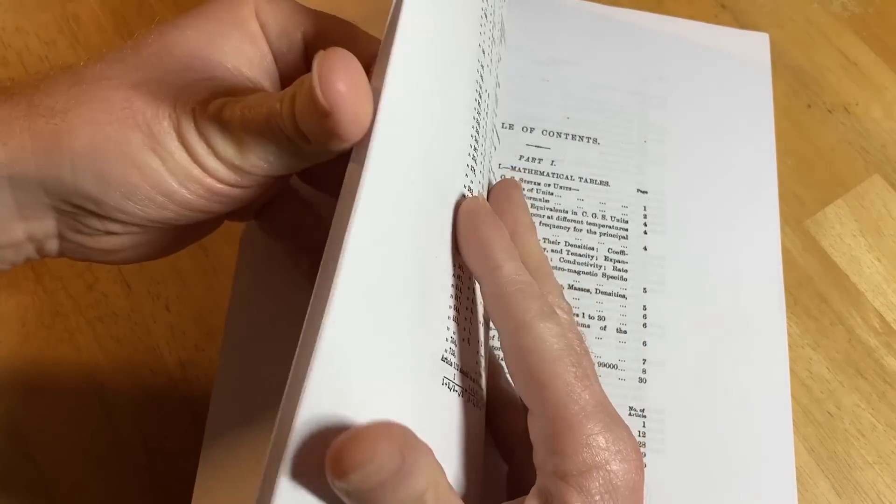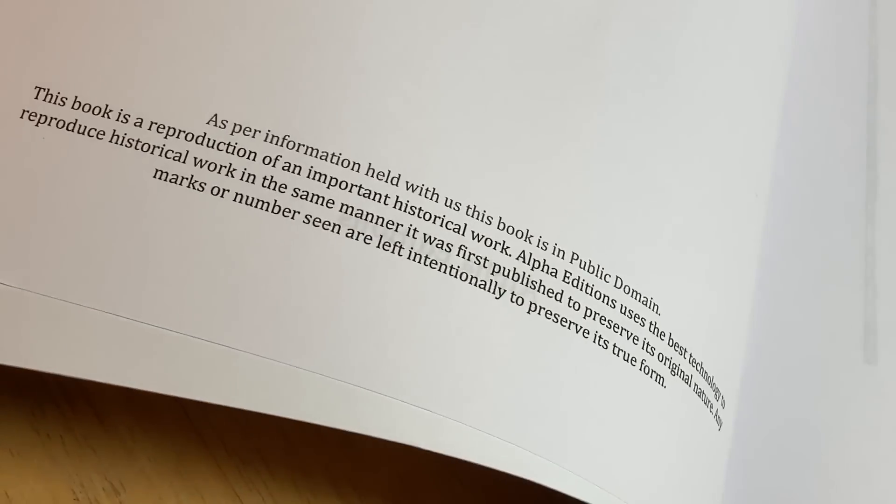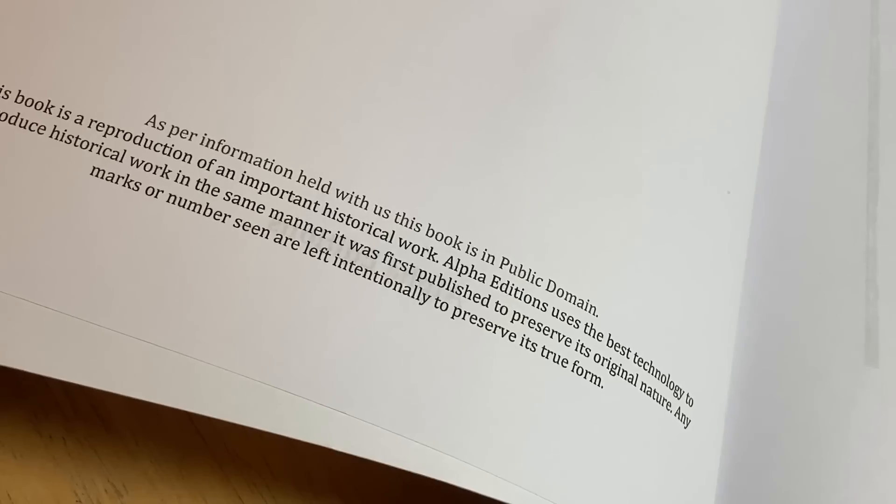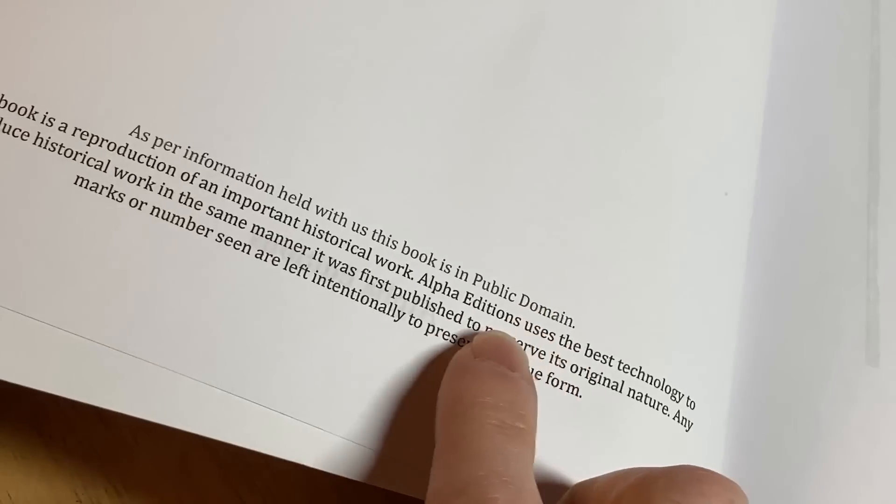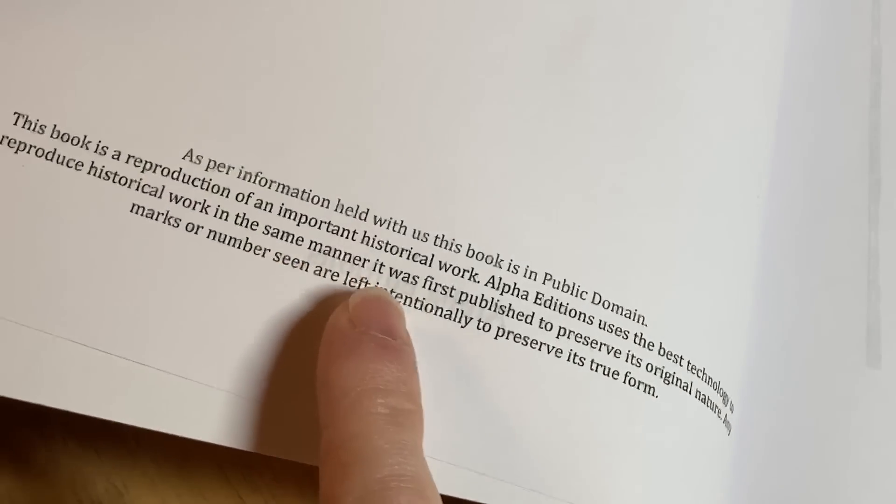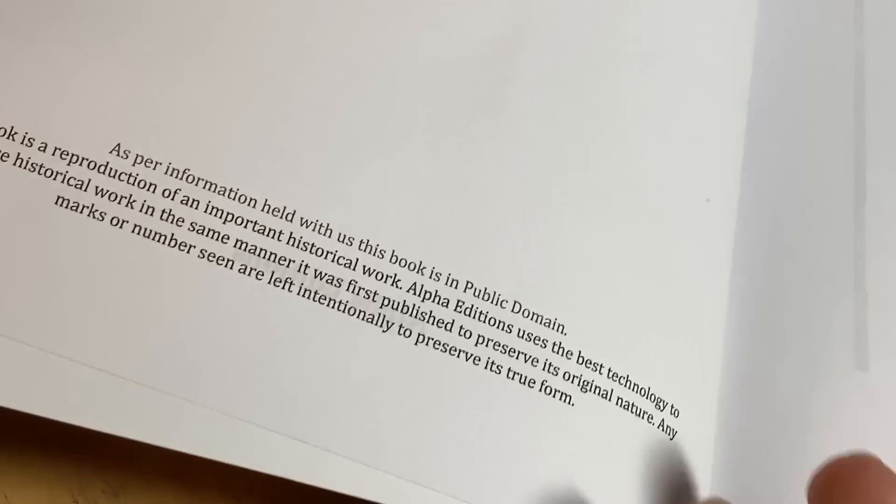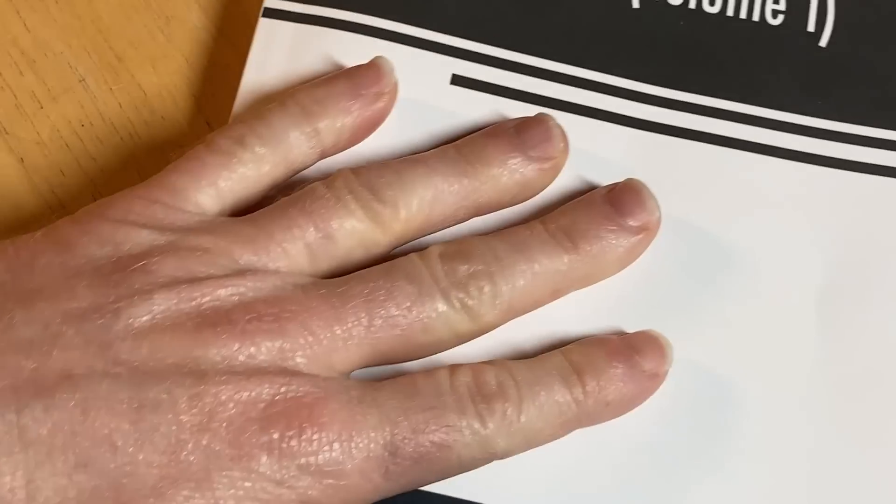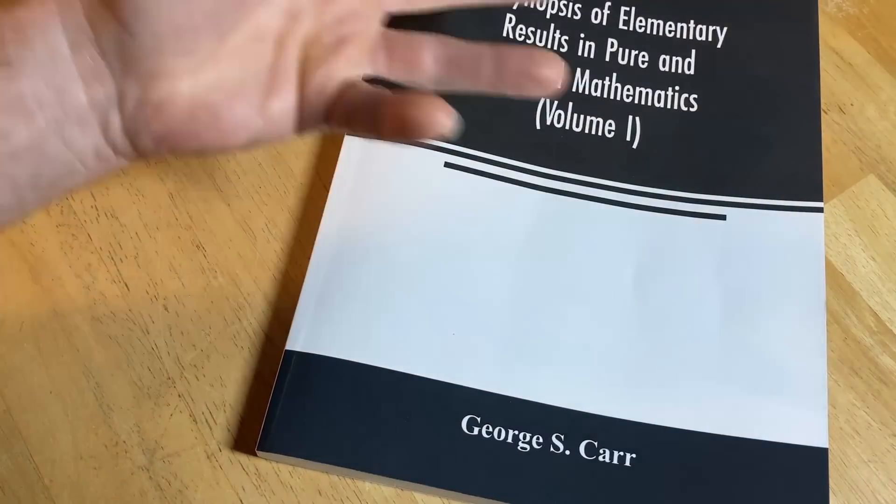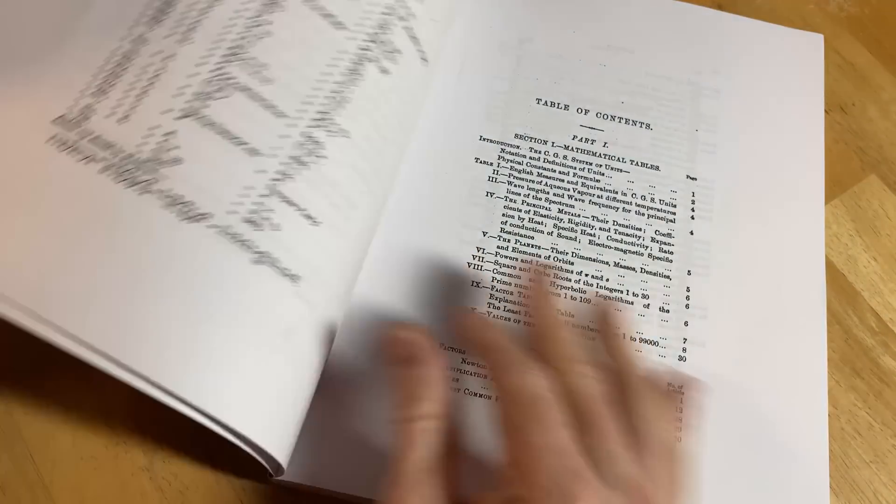It is in the public domain. Look, it says it here, actually. As per information held with us, this book is in public domain. Yeah, so it's in the public domain. This book is a reproduction of an important historical work. Alpha Editions is the company that reprints the book, and I guess they sell it on Amazon, so I'll leave a link to their version or maybe another version in case you want to buy a copy. That's where I got my copy.